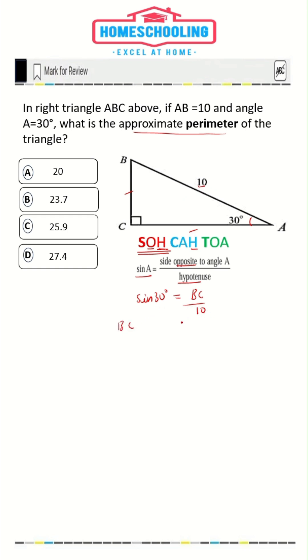So BC is sine 30 times 10. The value of sine 30 is half. Half times 10 would be 5, so BC value is 5.